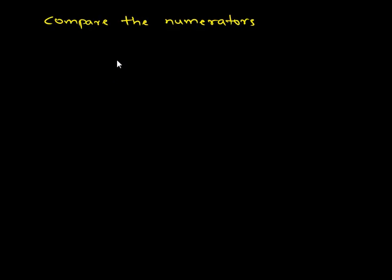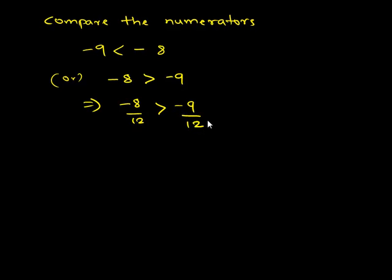The numerators we have is negative 8 and negative 9. Clearly we can see negative 9 is less than negative 8 or negative 8 is greater than negative 9. This implies negative 8 upon 12 is greater than negative 9 upon 12.